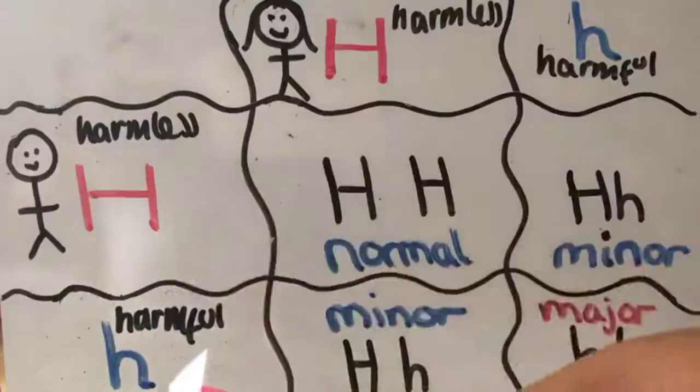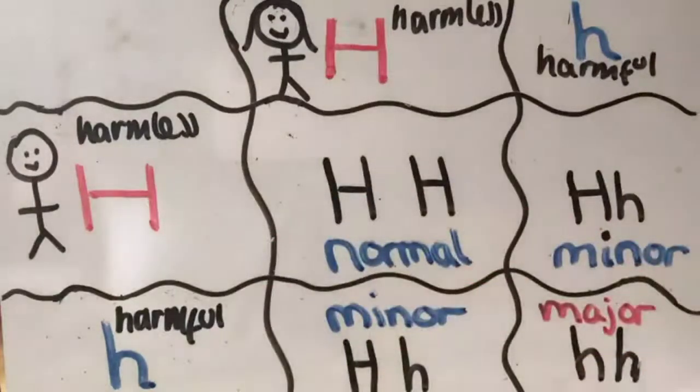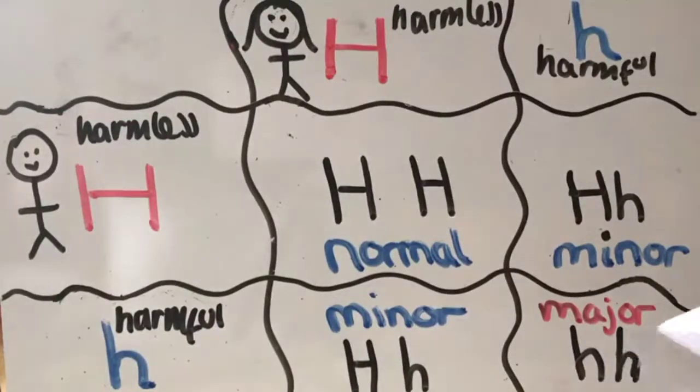both parents must have at least one recessive allele. The probability of these adults having a child with beta-thalassemia major is a quarter, and both adults may have thalassemia minor.